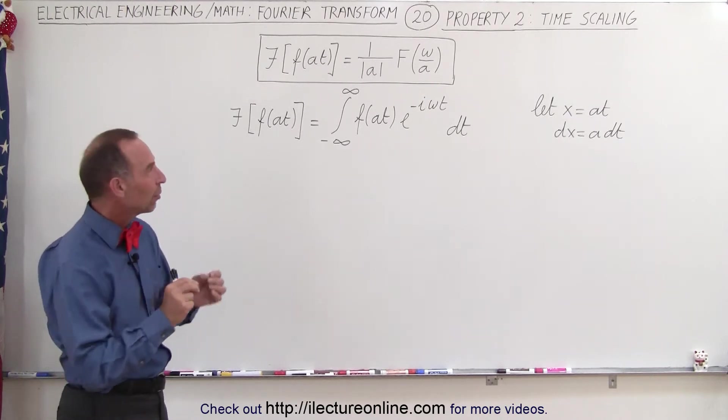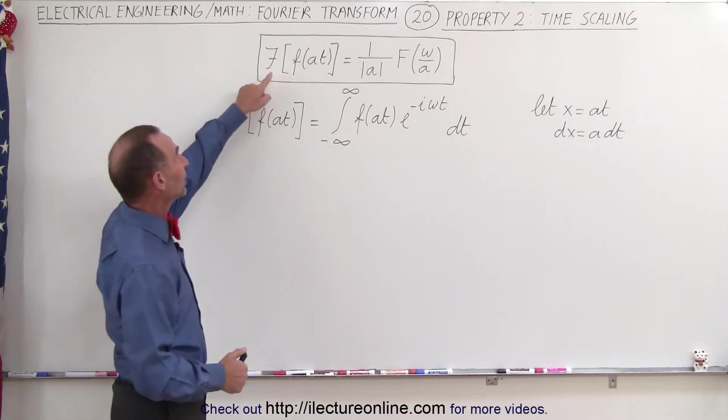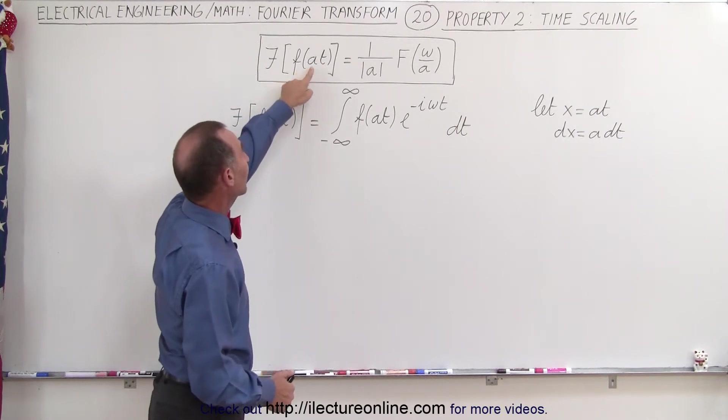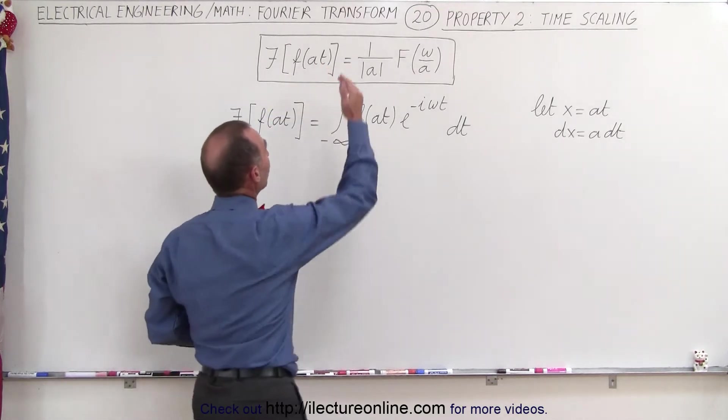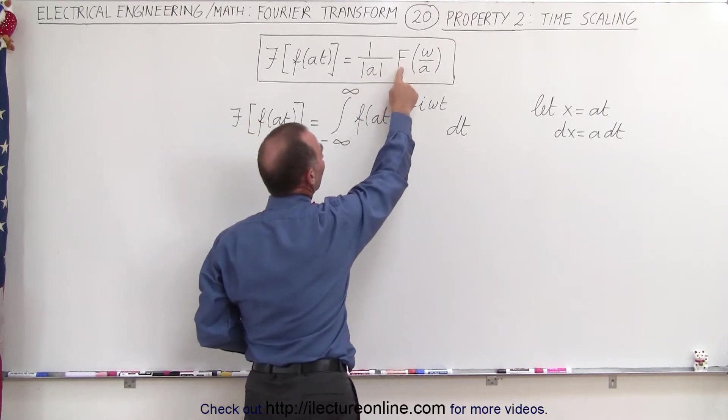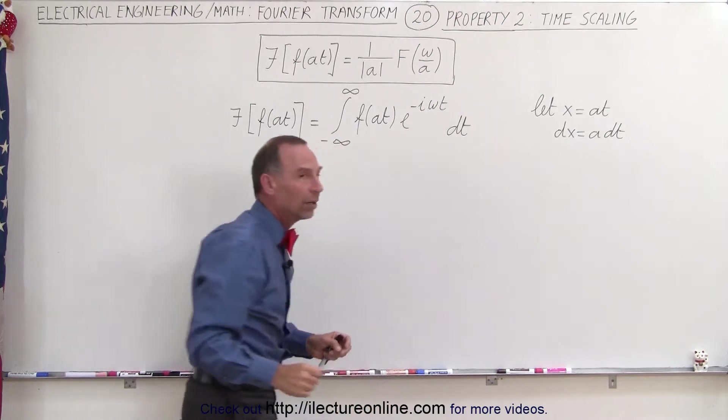This property tells us something important about the Fourier transform. If we take the Fourier transform of an input function where we have a constant multiplied times the time variable t, then the Fourier transform will be one over that constant—we need to take the absolute value sign of it—times the Fourier transform of the frequency divided by that constant.